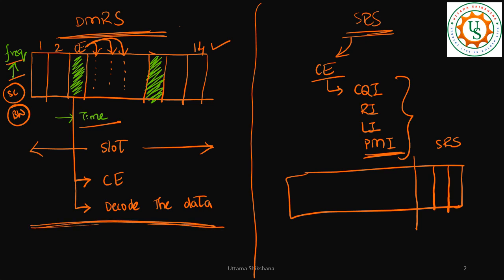Since we are going to decode the data, the channel estimate should be very accurate. If channel estimates are not accurate, you are not able to decode the data well and your bit error rate would increase. This channel estimation depends on various scenarios — if the channel is static, there could be only one DMRS location. If the channel is fast varying, for example in a high-speed scenario, one single DMRS is not sufficient; we need multiple DMRS symbols assigned at different OFDM symbol positions so the receiver can use interpolation techniques to get better channel estimates.